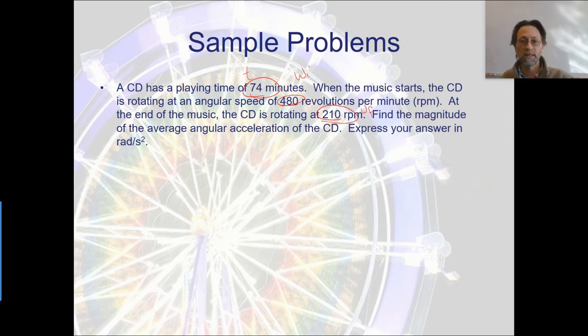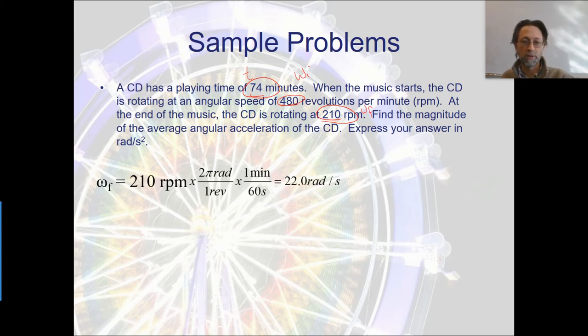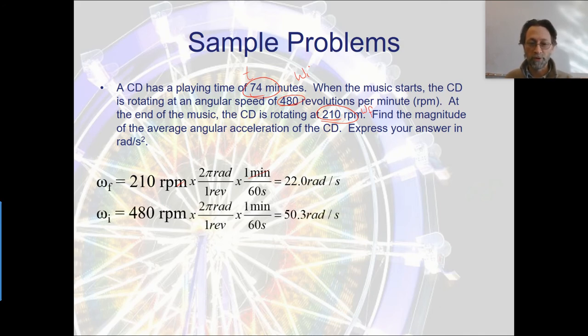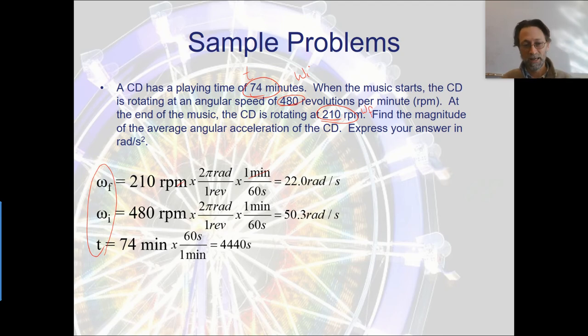Find the magnitude of the average angular acceleration of the CD and express your answer in radians per second. So like we said, that's our final. I'm going to convert that by putting revolutions in the bottom and saying one revolution is the same as two pi radians. And then to convert my minutes to seconds, I'm going to put minutes in the numerator so it cancels out with this per minutes in the denominator, and then one over seconds. Do the same thing with the 480 and we get a value for that. And then when we convert our time, we get a value of that in seconds. So then the next question is, if I'm looking for the acceleration, wouldn't I want to have an equation that has a final velocity and initial velocity and a time and an acceleration? And which one is that going to be?